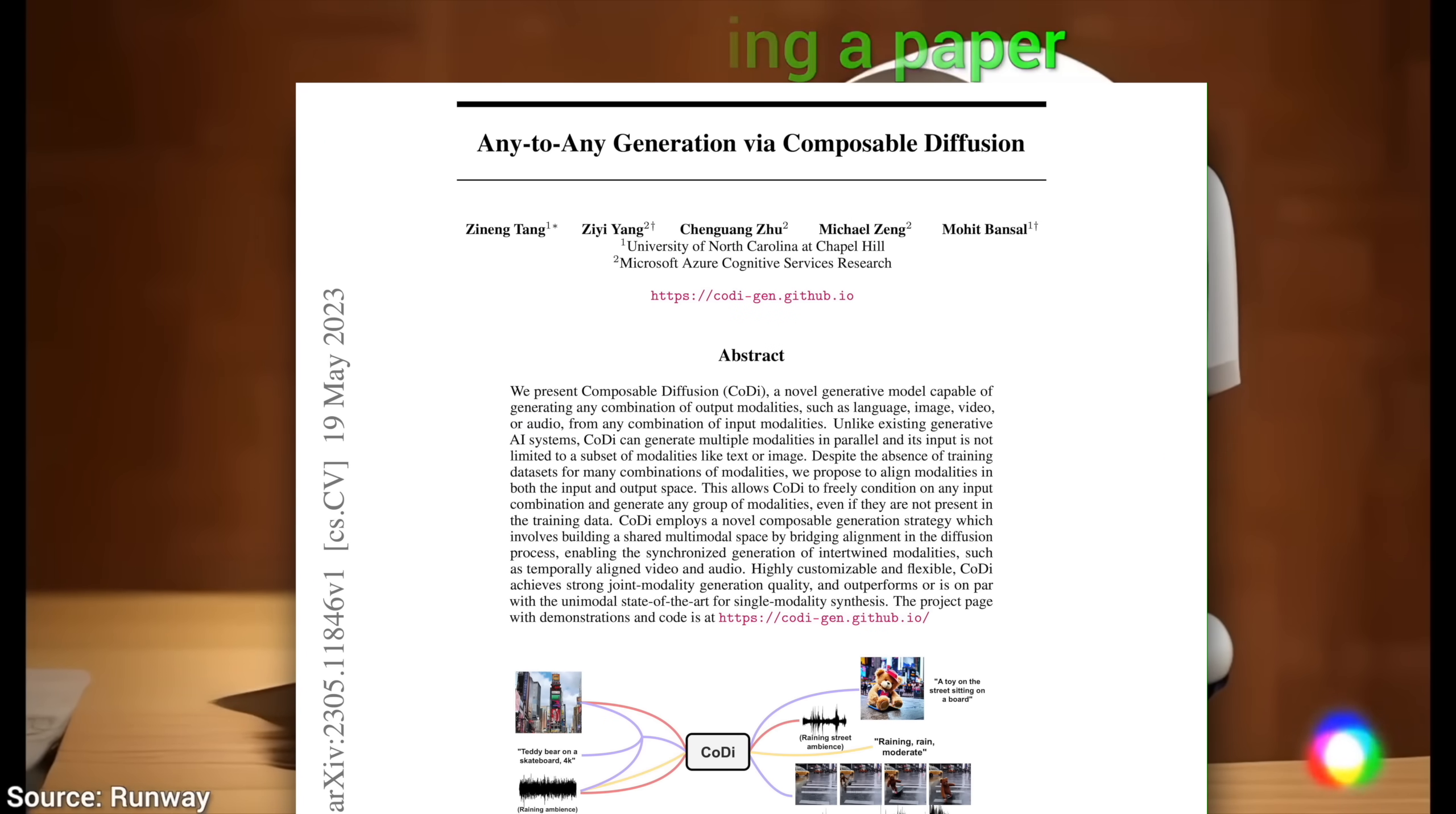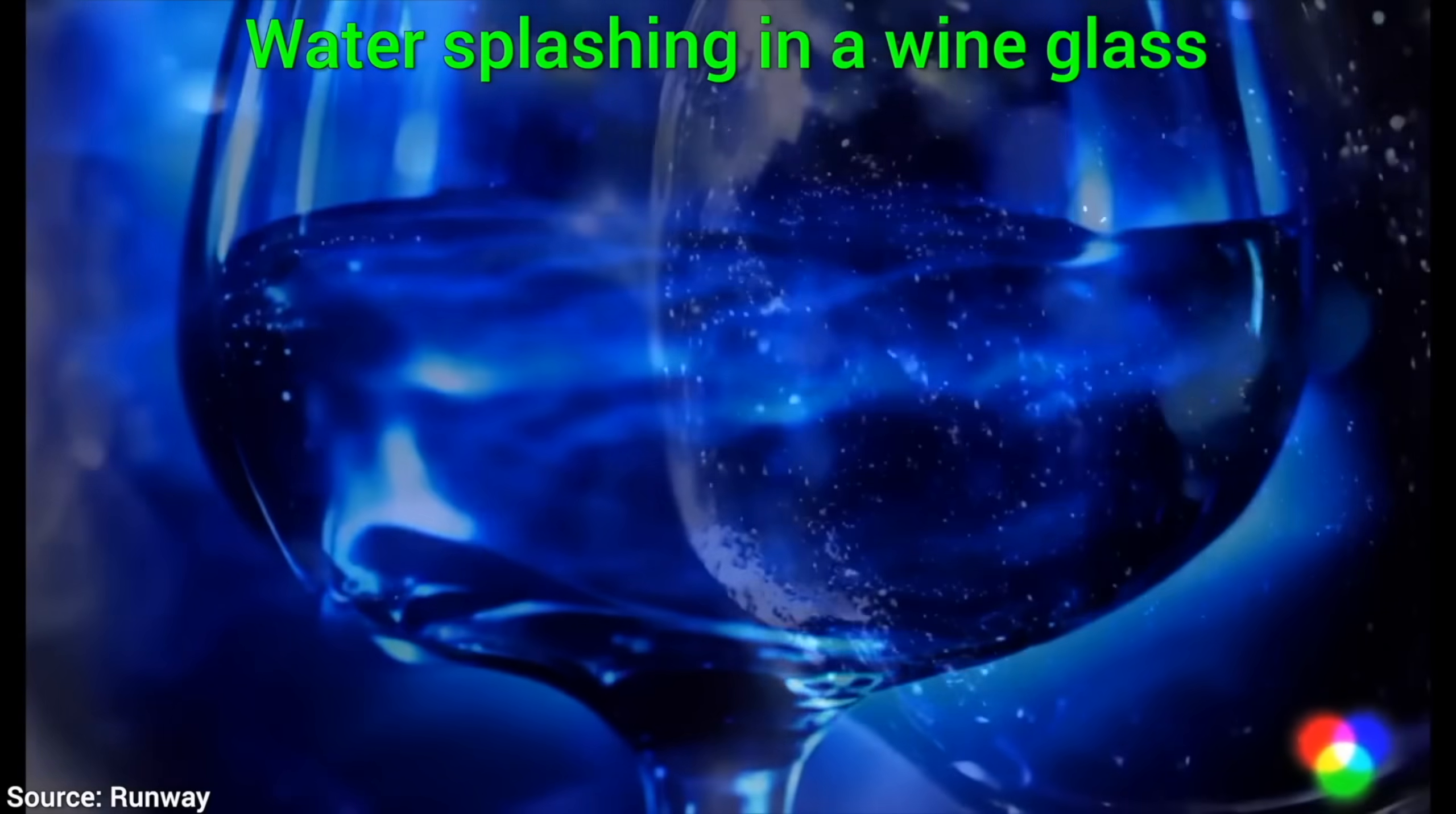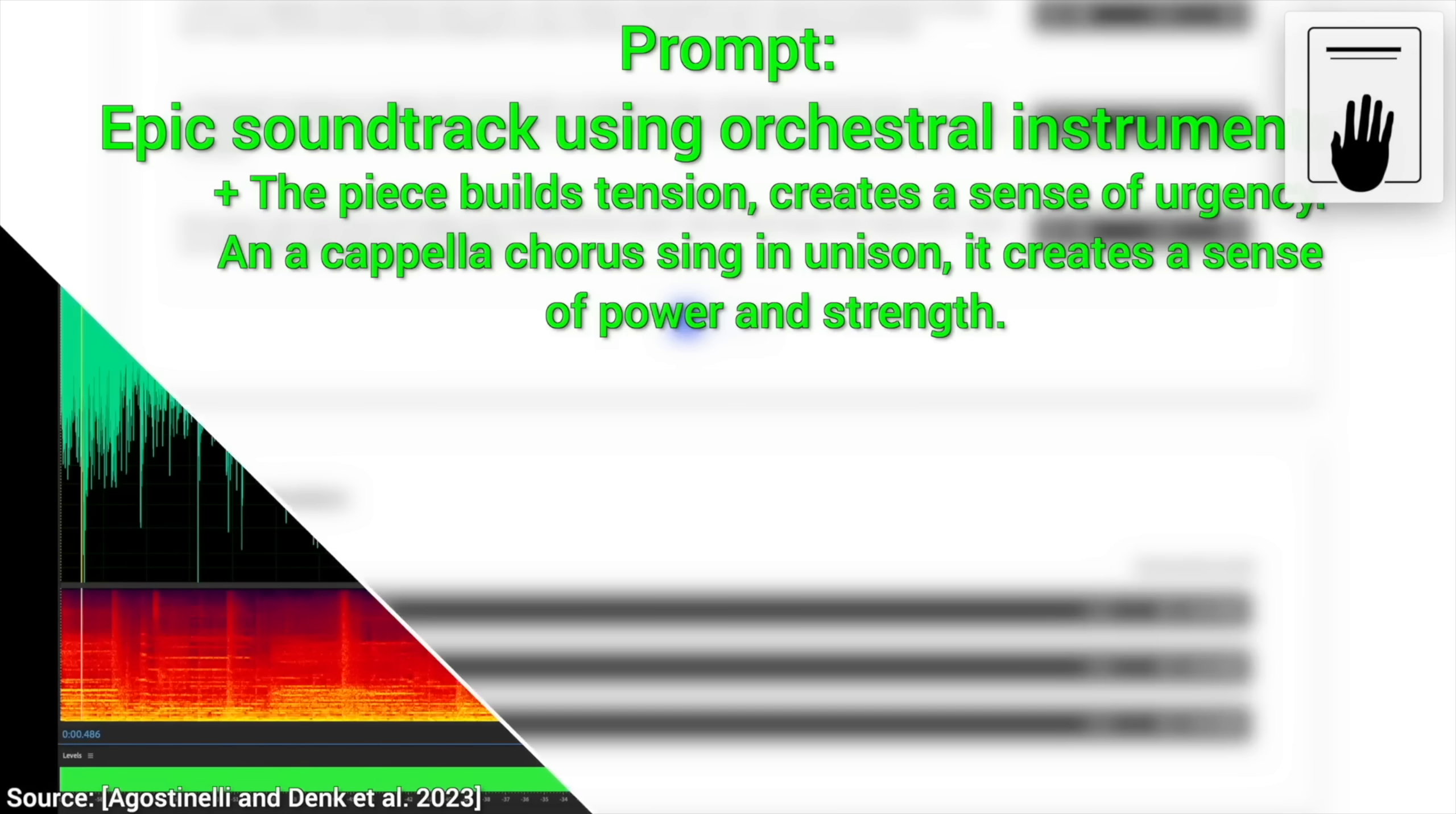Now, wait a minute, we are going to invoke the second law of papers here, which says that whatever you are thinking about, there is already a Two Minute Papers episode on that. For instance, we talked about Google's Music LM, an incredible AI-based technique that takes a text prompt and synthesizes incredible music. Listen.